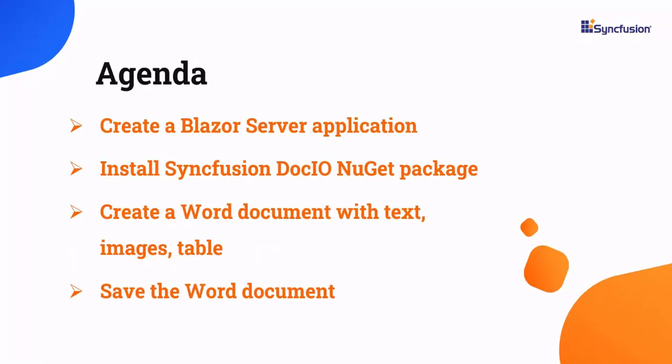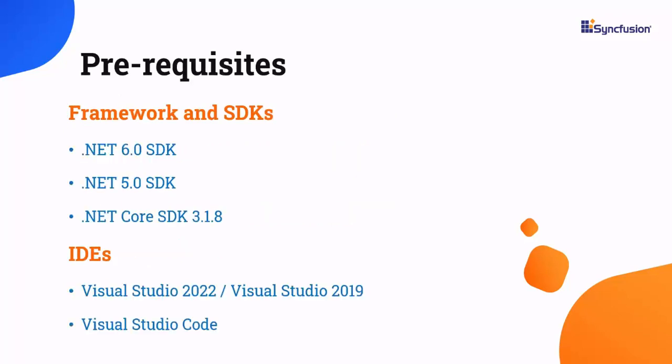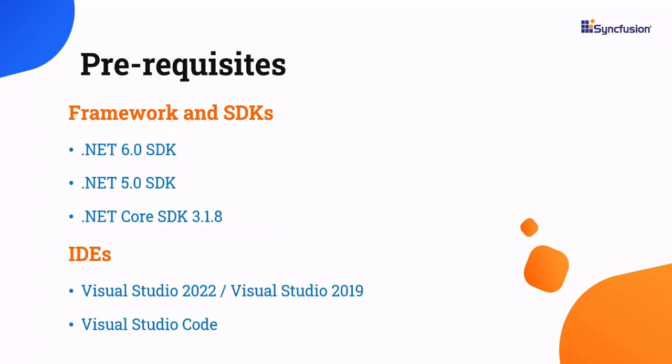In this video, I am going to explain how to create a Blazor server application in Visual Studio 2022 and add the Syncfusion DocIO NuGet package to the application. I will also explain the steps to create a Word document with text, images, and tables, and finally save that Word document. Before proceeding, make sure you have one of the following .NET SDKs and IDEs installed in your machine.